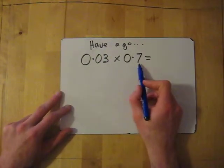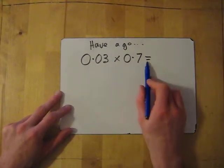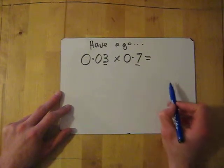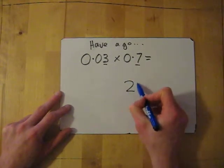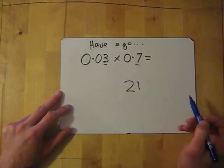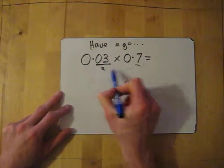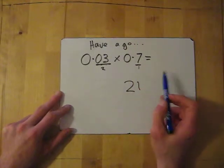So 0.03 times 0.7. So forget about decimals, so I'm just going to go through 3 times 7. 3 times 7 is 21. Then, how many numbers have I got after decimals? I've got 2 here, and I've got 1 here. So all together, I've got 3.